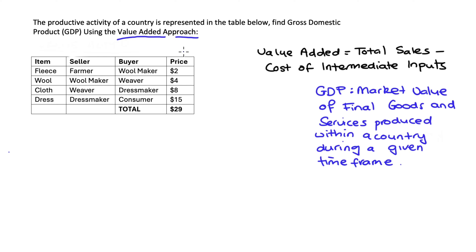I recently did a theory video on value added, so I'll link to that in the description below if you're interested or if you need it. In the question, the table has different columns: the first column is items, the second is the sellers of those items, the next is the buyers, and then we have the price that everything is being sold at. This table is similar to one I saw in a book — it's an interesting exercise to find value added when the information is set out like this.